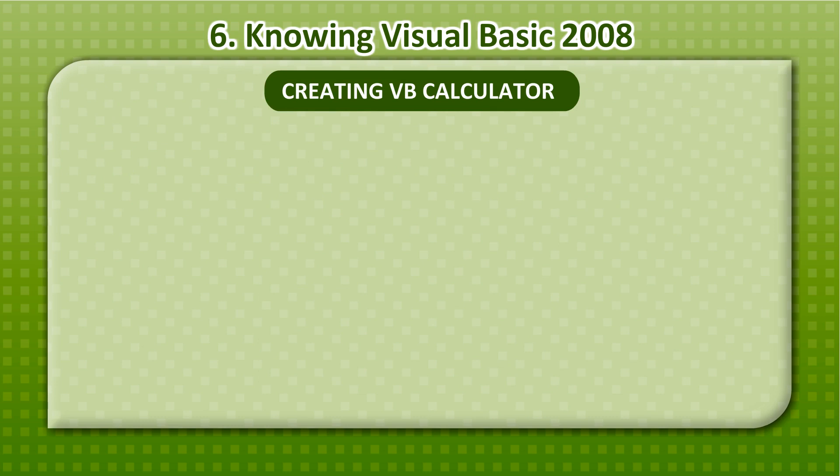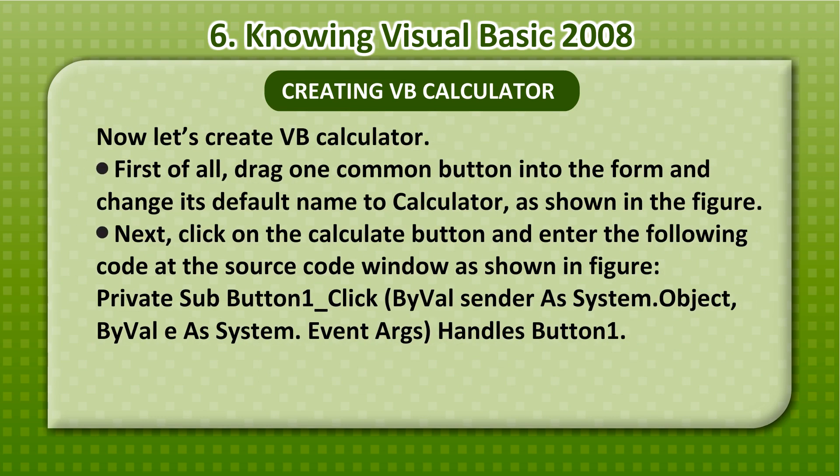Now let's create the VB Calculator. First, drag one common button into the form and change its default name to 'Calculator', as shown in the figure. Next, click on the Calculator button and enter the following code in the Source Code window.